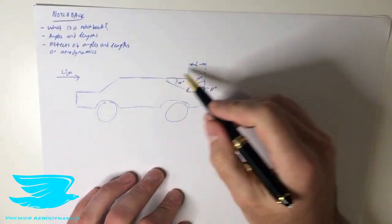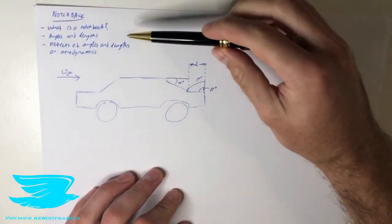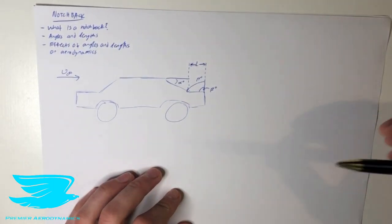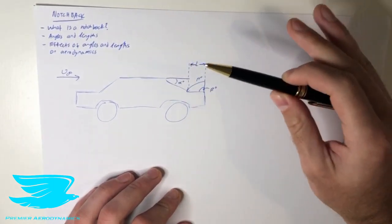However, it is significantly more complicated. As you can see here, I have a diagram. So we're going to be going through what is a notchback, the angles and length that define the notchback geometry, and then the effects of these angles and lengths on the aerodynamics.